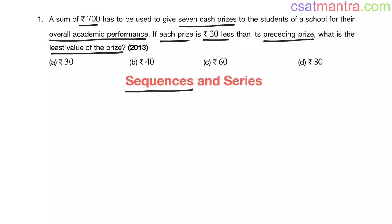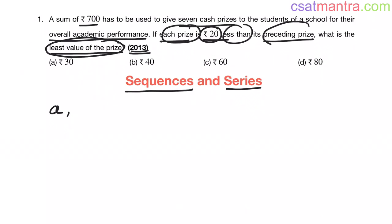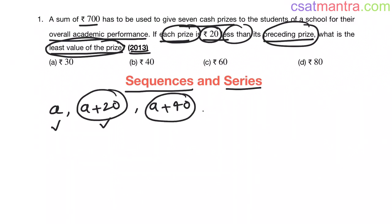This question is from the sequences and series chapter, asked in 2013. We are asked to find the least value of the prize. Let's assume it as A. Each prize is 20 rupees less than its preceding prize, so the preceding prize would be A plus 20. A is 20 rupees less than A plus 20. The next prizes would be A plus 40, A plus 60, A plus 80, A plus 100, and A plus 120 — giving us 7 cash prizes in total.